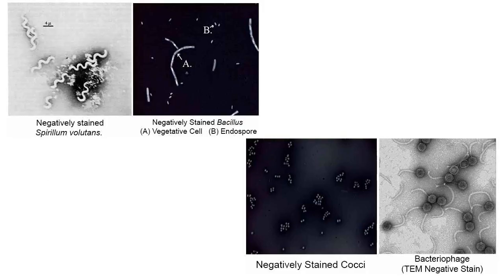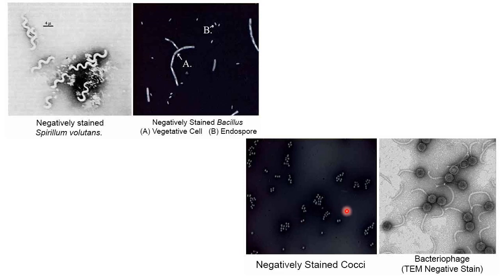This is how you will see bacterial culture. This is negatively stained Spirillum volutans, and this is negatively stained Bacillus — these are the vegetative cells and these are the spores. Negatively stained cocci will look something like this. Then bacteriophage can also be visualized, which is observed under the electron microscope.